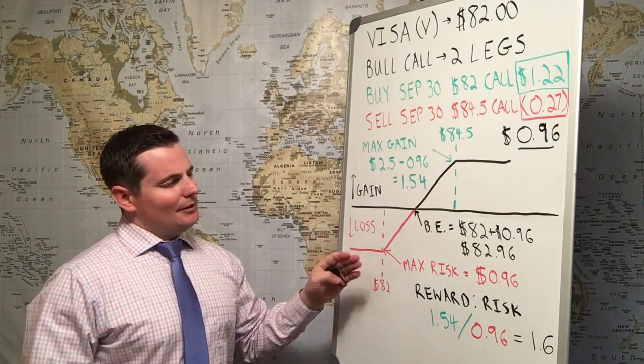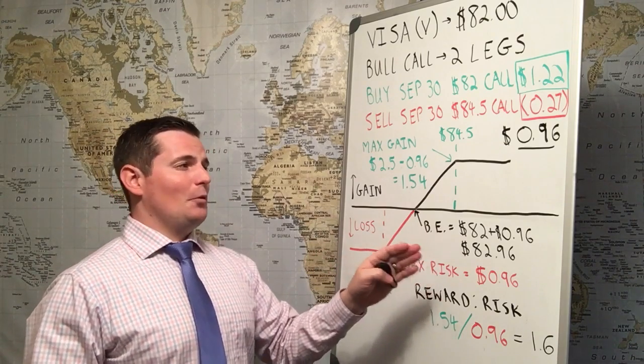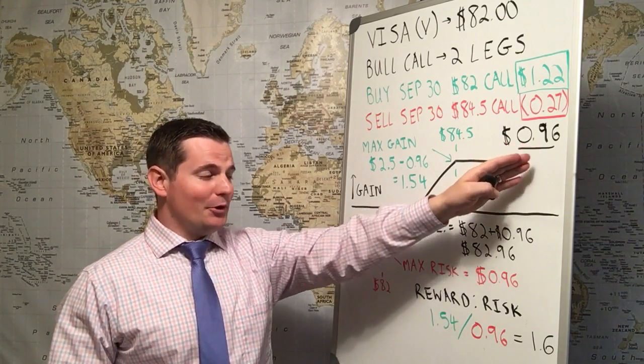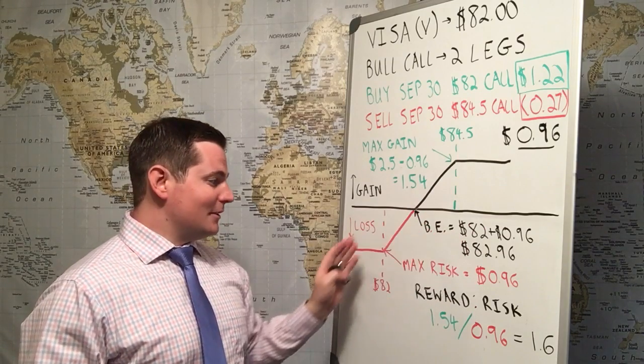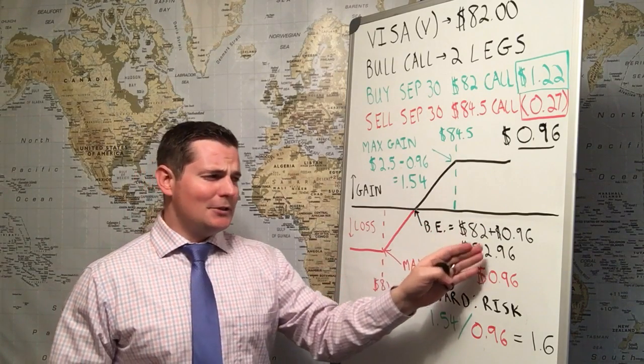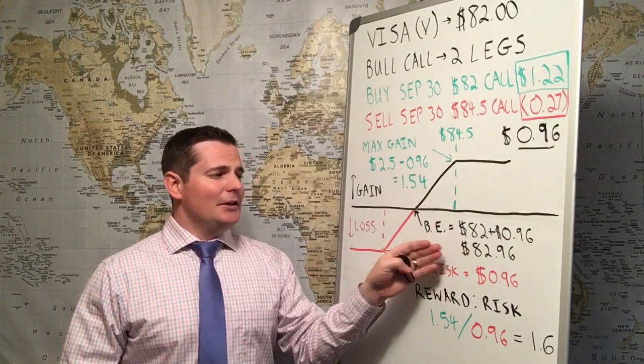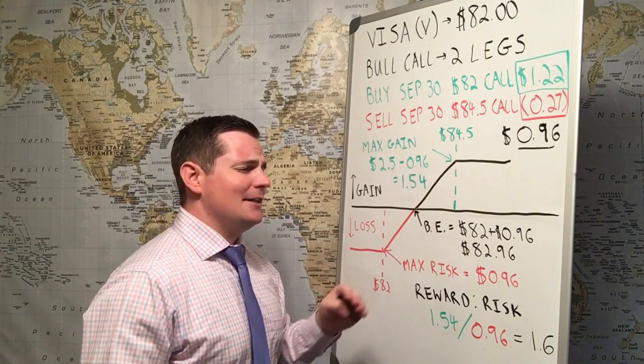You can calculate a break even point, which is the debit, what you're debited, plus the lower strike price. So, $82 plus $0.96, you get a break even of $82.96.